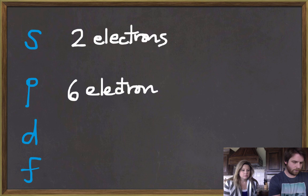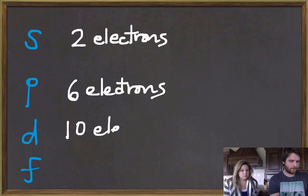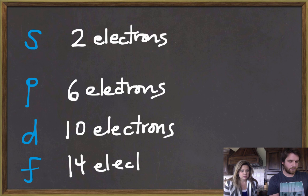And then the d orbital holds ten. This is the maximum number they can hold, by the way: two, six, and ten. And the f will hold up to fourteen electrons.